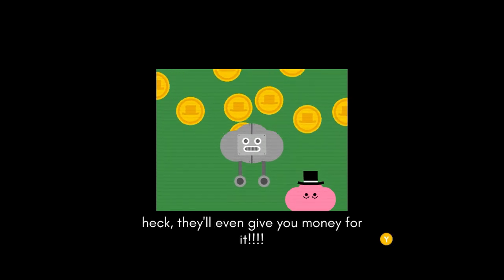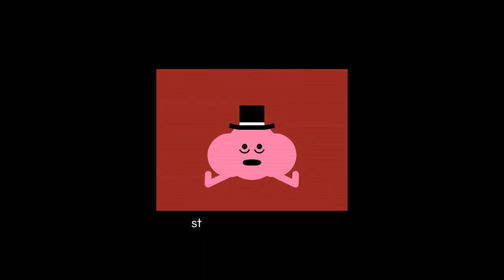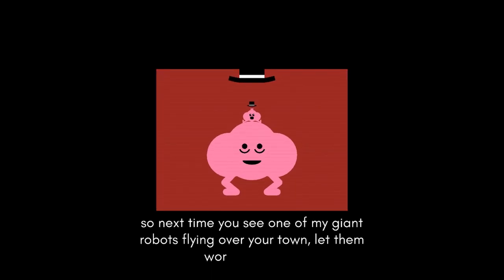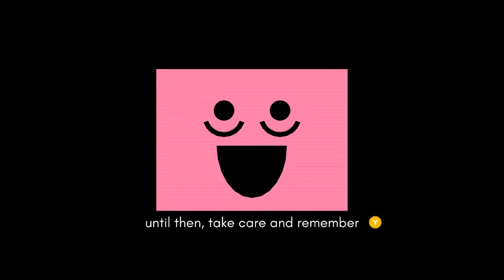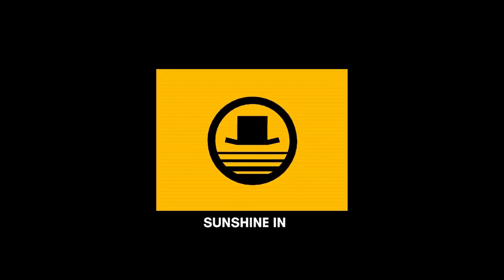Hey, we'll even give you money for it. They just spit out money. Free money. They just pick up all your litter and then they litter with money instead. Do not trust me or trust this guy. Trust me, it's free money. So next time you see one of my giant robots flying over your town, let them work peacefully and I'll make you rich in no time. Until then, take care and remember, free money. You are perfect. Oh bless, he's a charmer, that creepy nose man. Sunshine Inc, a better world awaits.